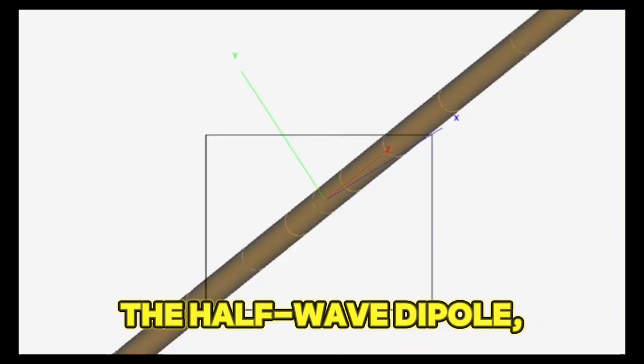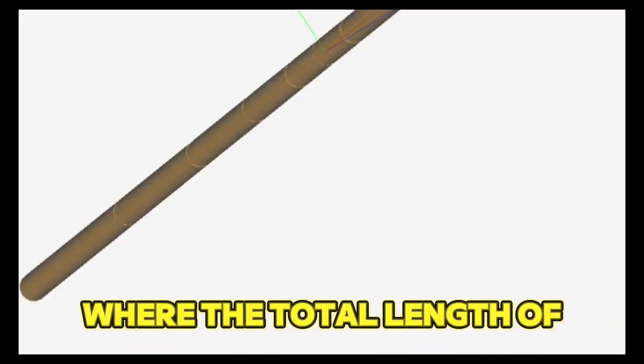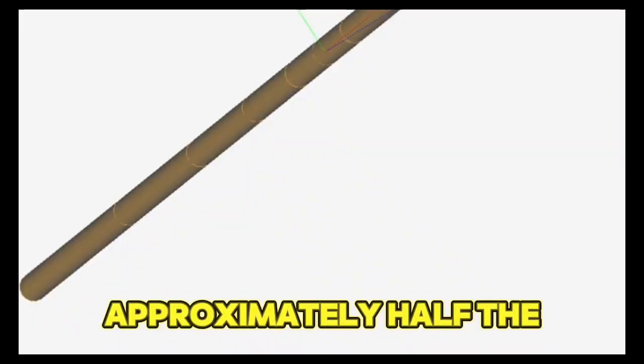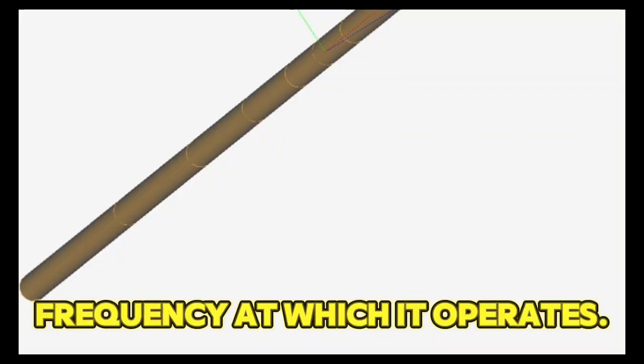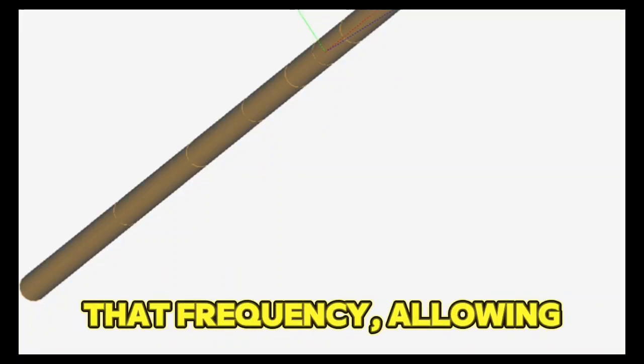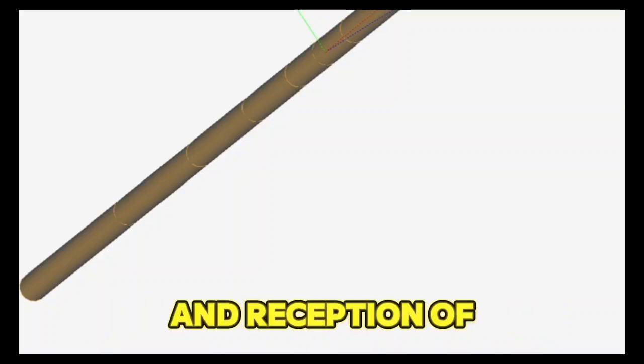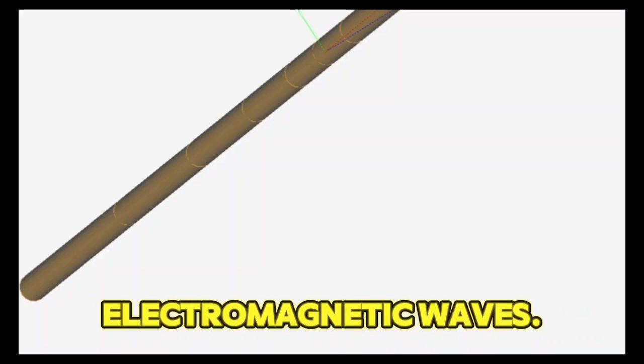The most common type is the half-wave dipole, where the total length of the antenna is approximately half the wavelength of the frequency at which it operates. This makes it resonant at that frequency, allowing for efficient transmission and reception of electromagnetic waves.